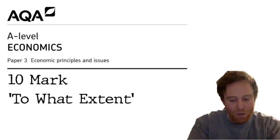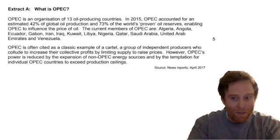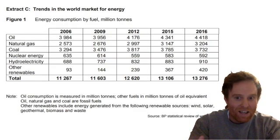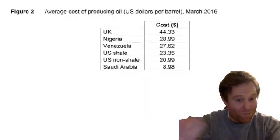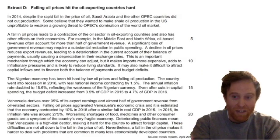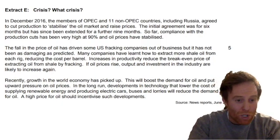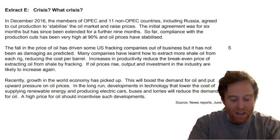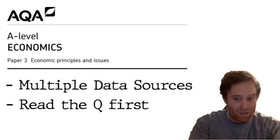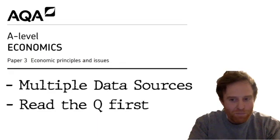One of the key factors to consider with Paper 3 is the amount of extracts — one extract, two extracts, some data, some further data, more data, and it just keeps going with another extract and another. There's so much information in Paper 3. My first bit of advice is: with all this data and all these extracts, I would not recommend reading it first.